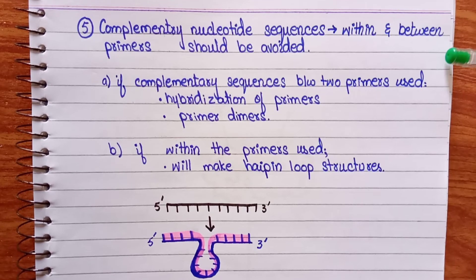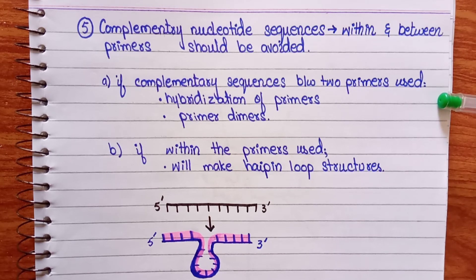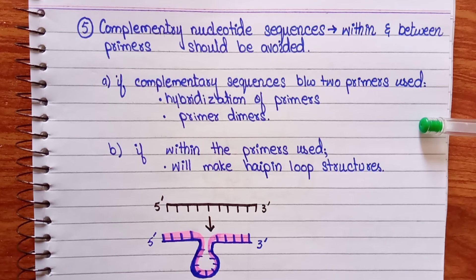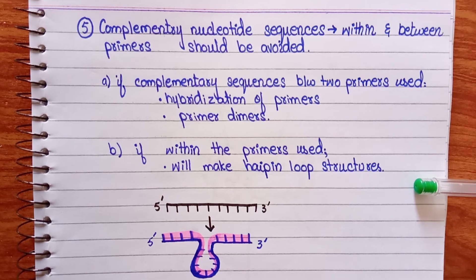Finally, complementary nucleotide sequences within primers and between primers should be avoided. Complementary sequences between two primers cause hybridization and primer dimer formation. Complementary sequences within a primer cause hairpin loop-like structures to form.